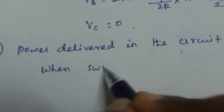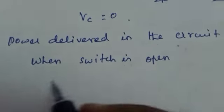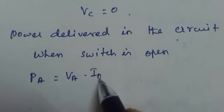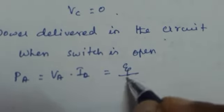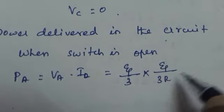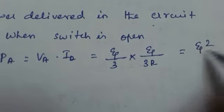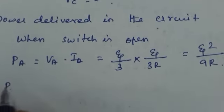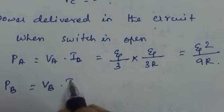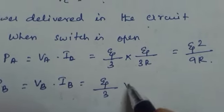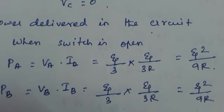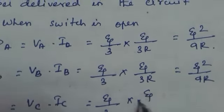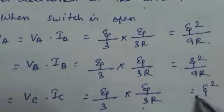For part D, we calculate the power delivered to the circuit. When the switch is open, the power for each bulb is: PA = VA × IA = (ψ/3) × (ψ/3R) = ψ²/9R. Similarly, PB = ψ²/9R and PC = (ψ/3) × (ψ/3R) = ψ²/9R. Each bulb dissipates ψ²/9R when the switch is open.